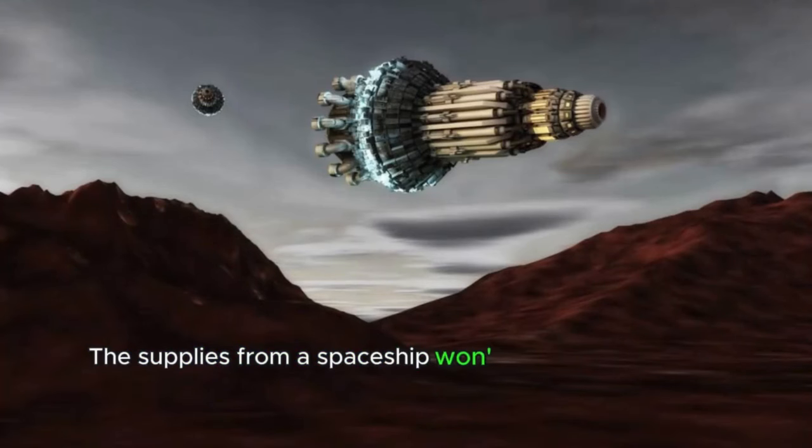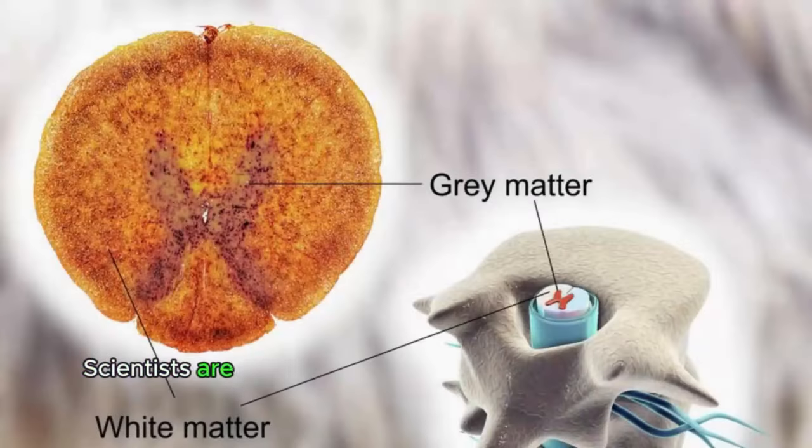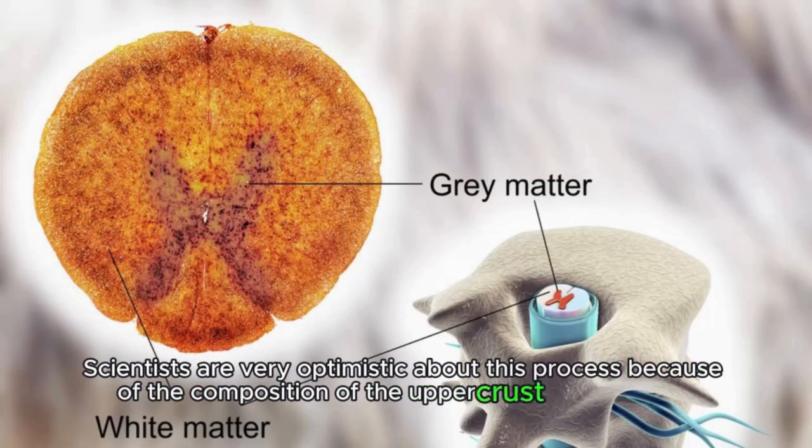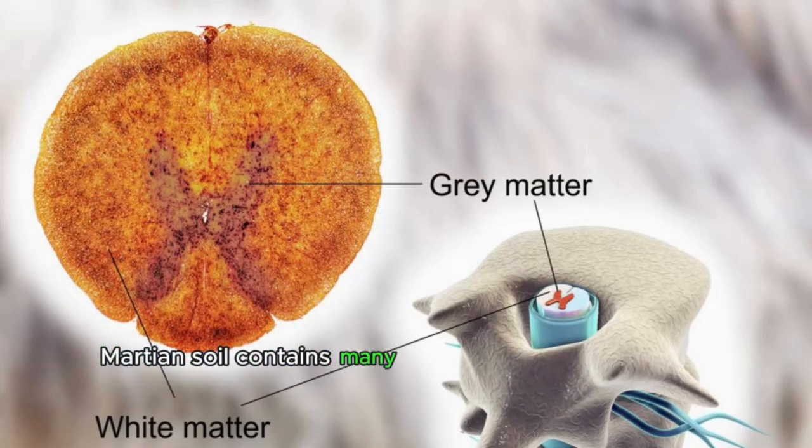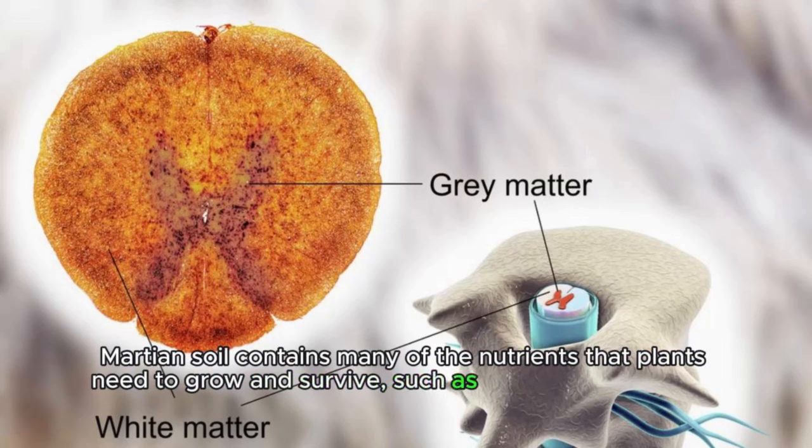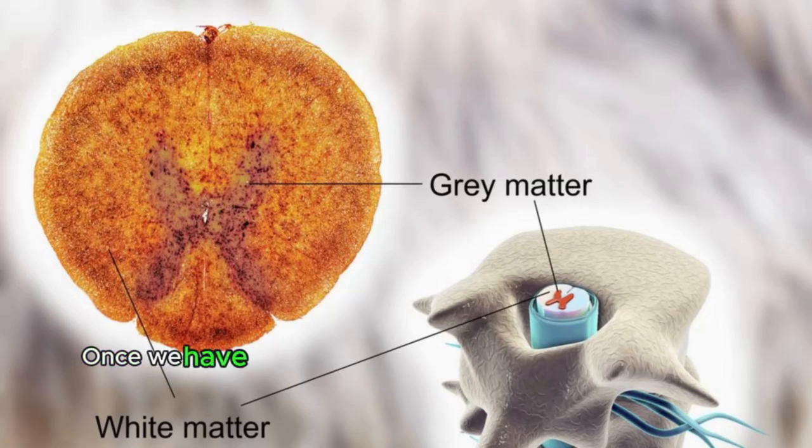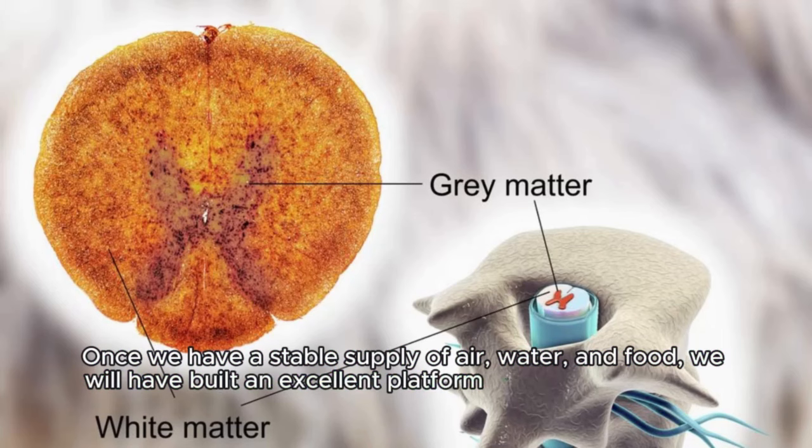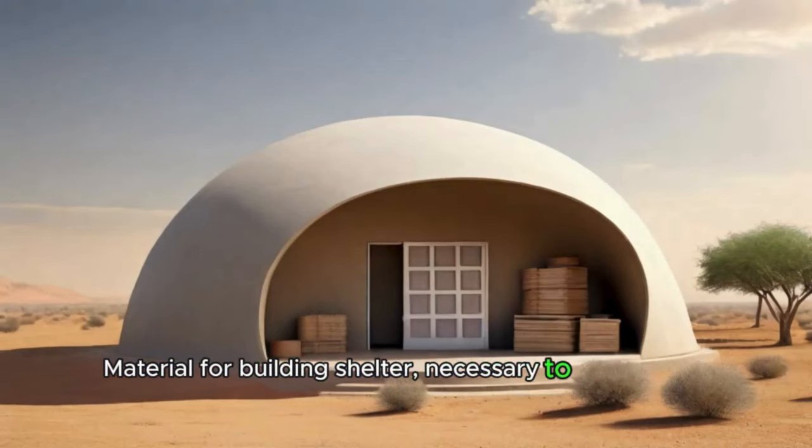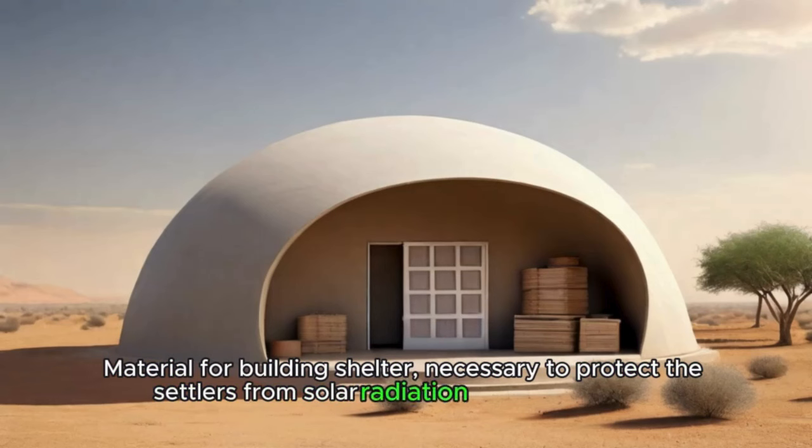The supplies from a spaceship won't last forever, so the colony will have to make headway in growing edible crops. Scientists are very optimistic about this process because of the composition of the upper crust of the planet. Martian soil contains many of the nutrients that plants need to grow and survive, such as nitrogen, potassium, and phosphorus. Once we have a stable supply of air, water, and food, we will have built an excellent platform for building a colony from available materials. Martian soil can serve as a good material for building shelter, necessary to protect the settlers from solar radiation and dust storms.